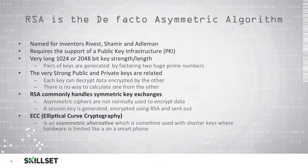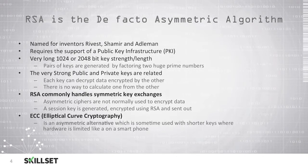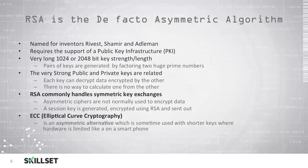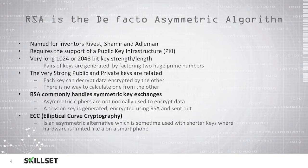RSA is the de facto asymmetric algorithm that is most widely used. It is named after its founders Rivest, Shamir, and Adleman. It requires the support of public key infrastructure. As discussed previously, it uses very long key lengths such as 1024 or 2048 bits, and these keys are generated by factoring very large prime numbers.